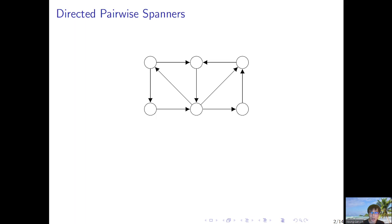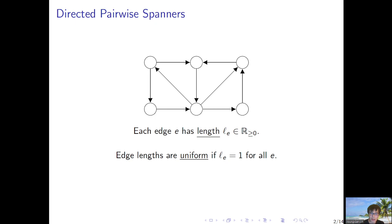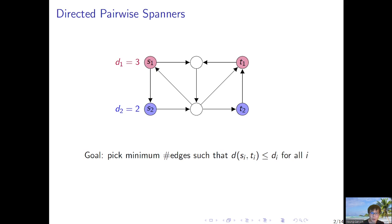I will start by introducing the two main problems of interest. For the directed pairwise spanners problem, on the input we are given a directed graph where each edge has a length that is non-negative. We say the lengths are uniform if they are all ones. We also have terminal pairs with target distances. Our goal is to pick a minimum number of edges such that the distance from S_i to T_i is at most D_i. For example, the red thick edges in this graph form a directed pairwise spanner, because the distance from S1 to T1 is 3, and the distance from S2 to T2 is at most 2.